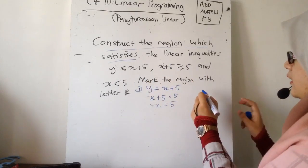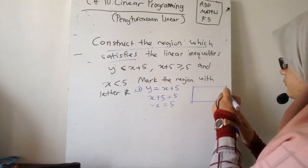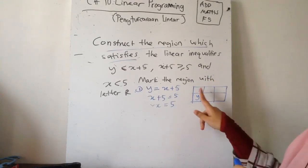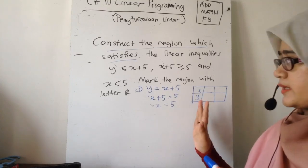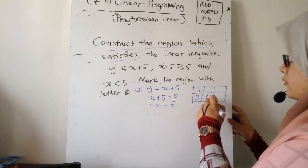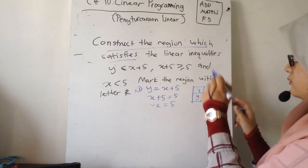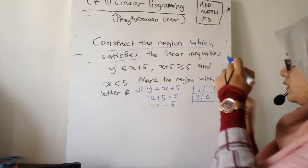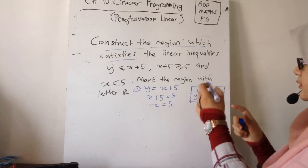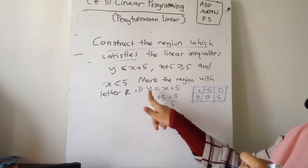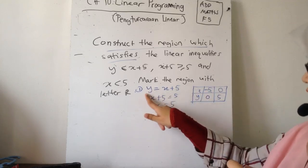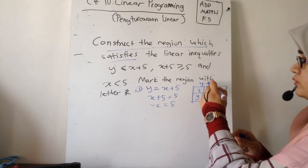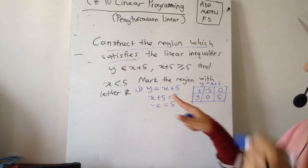Untuk lukis line yang ada X dengan Y ni, kita kena ada at least dua point. Dua point tu selalunya kita akan ambil X intercept ataupun Y intercept. Kalau X intercept - X ada nilai, Y dia kosong. Kalau Y intercept - Y ada nilai, X dia kosong. Contoh untuk yang first equation: kalau X kosong, Y dapat lima. Kalau Y kosong, X dapat negatif lima. Ganti dalam ni je balik - kalau ganti balik negatif lima, lima tolak lima, kosong. Kalau ganti kosong dekat X, lima tambah kosong dapat lima.